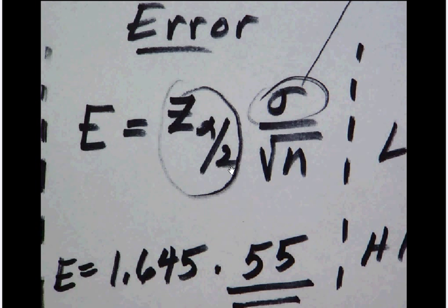Keep in mind here that the more sure we want to be, then the bigger our z alpha over 2 comes. So the more confident that we are that we have the right answer, the bigger the interval, the wider it's going to be in order to capture the answer. So high confidence is going to cause big errors.